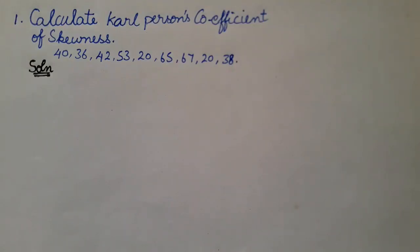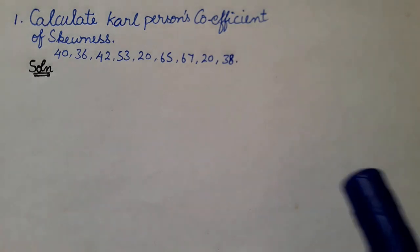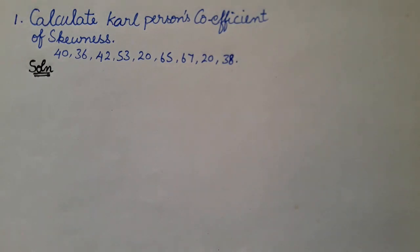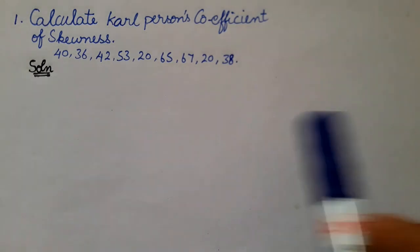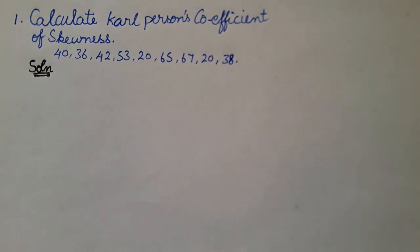Here is a question. Calculate Karl Pearson's coefficient of skewness. The data given in the question is: 40, 36, 42, 53... This is how to solve it. Here is the formula: mean minus mode divided by standard deviation.